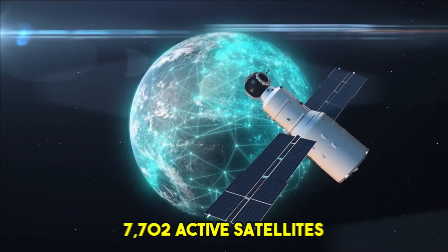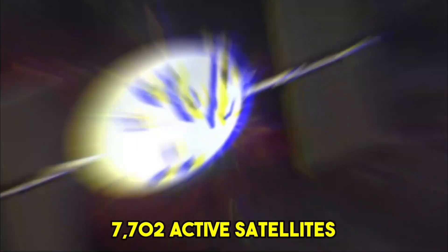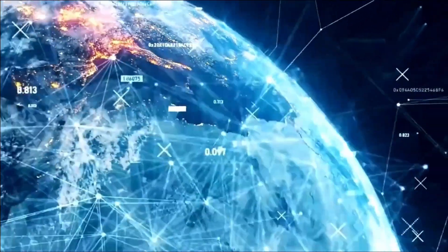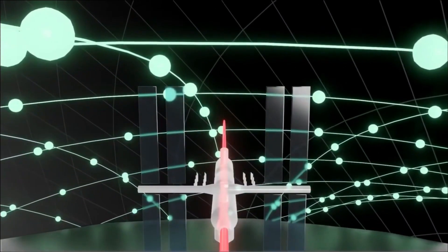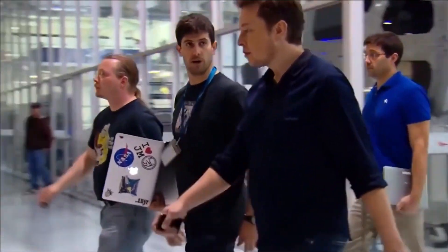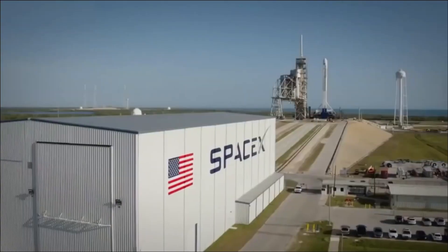Presently, there are 7,702 active satellites located throughout various Earth orbits. But remarkably, roughly 55% of these orbiting pioneers belong to none other than SpaceX. That's a huge achievement for a company whose first official launch happened less than a decade ago.